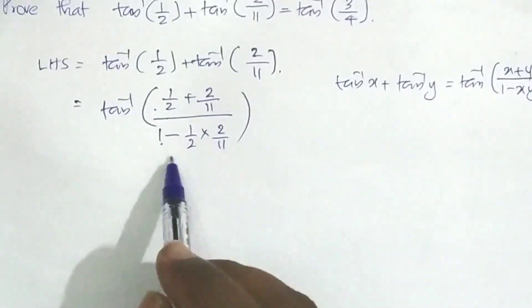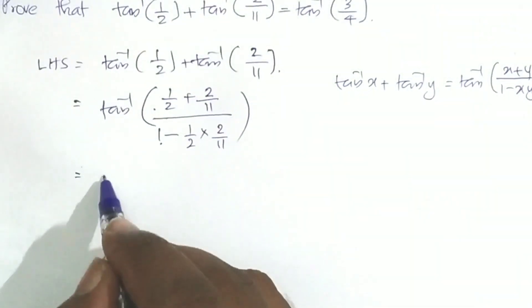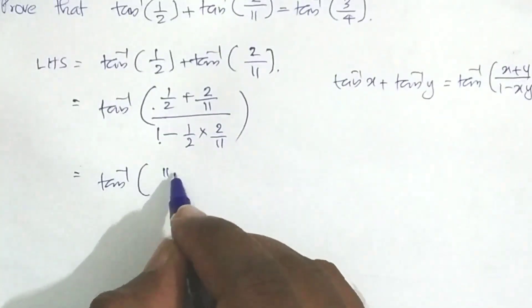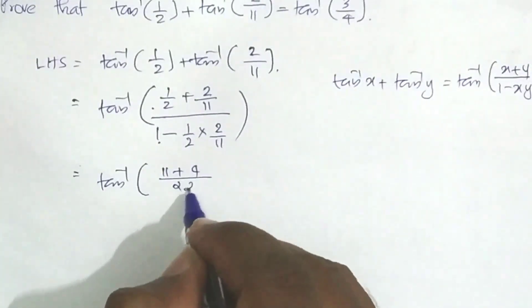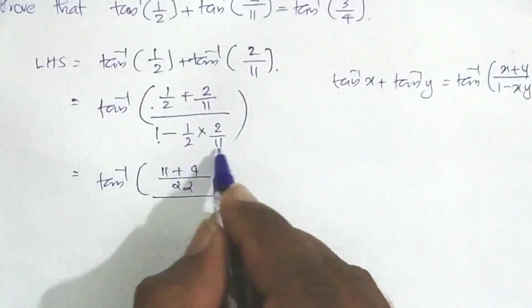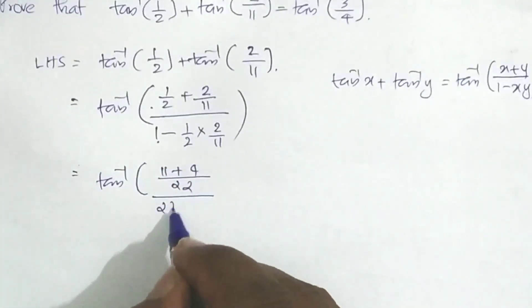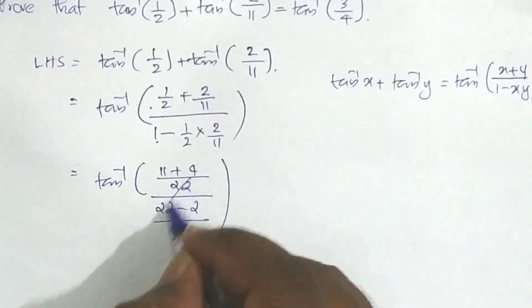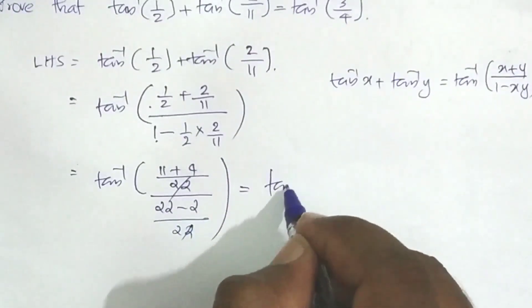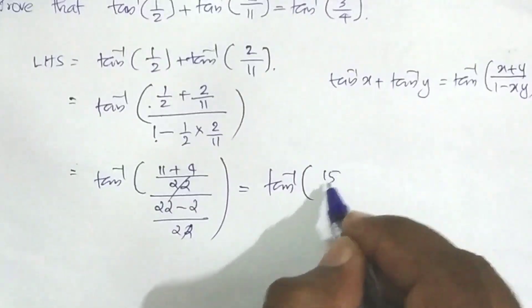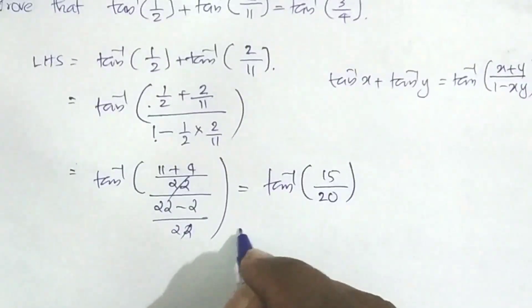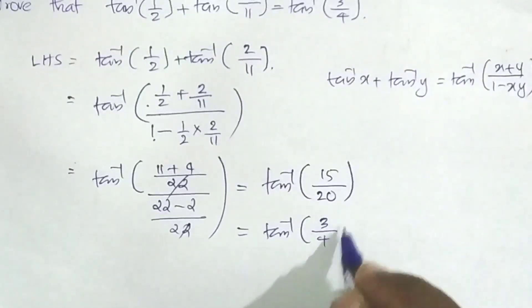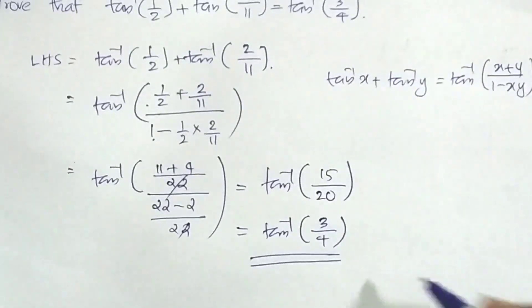Simplifying: the numerator is (11 plus 4)/22, which gives 15/22. The denominator is (22 minus 2)/22, which is 20/22. The 22s cancel, giving tan inverse of 15/20, which simplifies to tan inverse of 3/4. LHS equals RHS, proved.